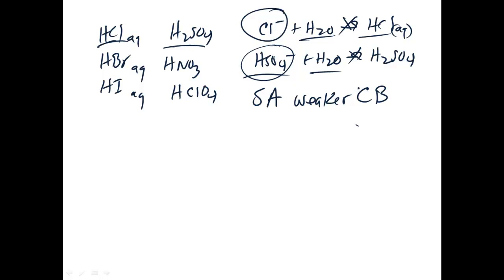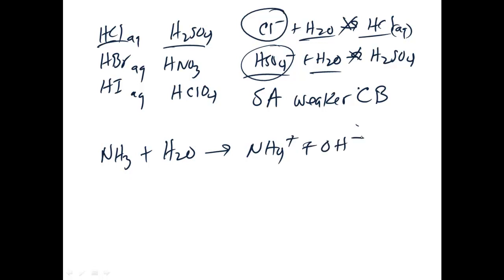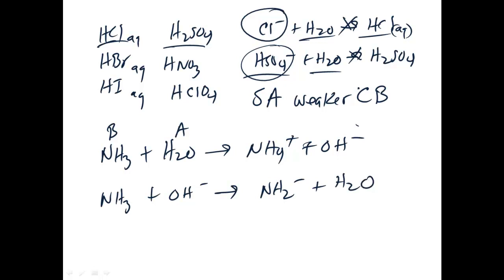Now take ammonia. When added to water, we get ammonium ion plus hydroxide ion — ammonia acts as a base. But if we put ammonia with the hydroxide ion, we can get the amide ion (NH₂⁻) plus H₂O, meaning ammonia can also act as an acid. So ammonia is amphoteric — it can act as both an acid and a base.